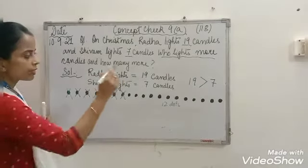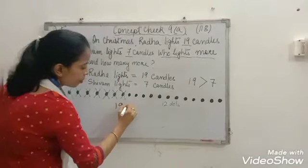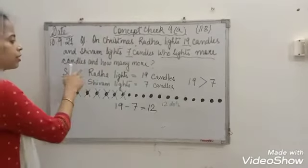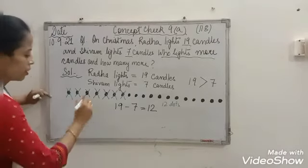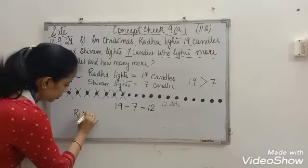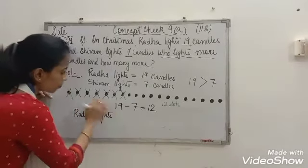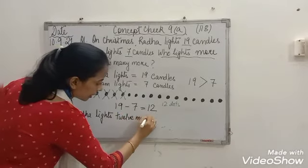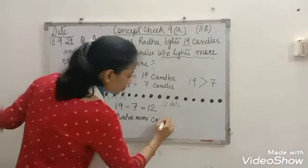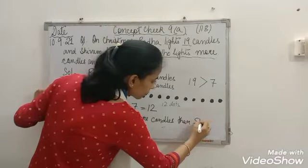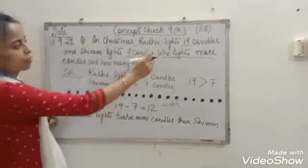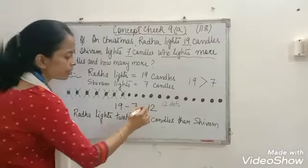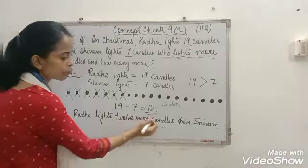12 dots representing 12 candles. When we write in subtraction form, 19 minus 7 equals 12. So, who lights more candles? Radha lights more candles. How many more? Radha lights 12 more candles than Sribam. The difference is 12. So, Radha lights 12 more candles than Sribam.